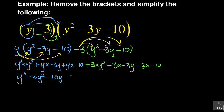Moving on: minus 3 times y squared gives minus 3y squared. Minus 3 times minus 3y — a negative times a negative gives a positive — so that is positive 9y. And minus 3 times minus 10 — a negative times a negative is positive — so 3 times 10 is 30, giving us plus 30.